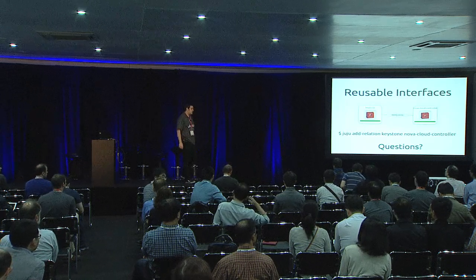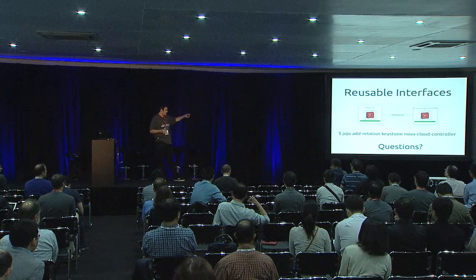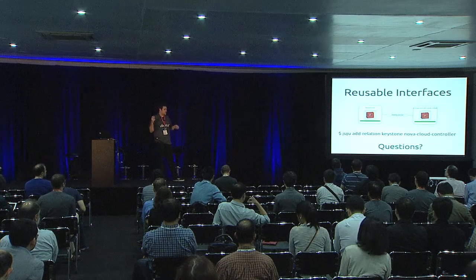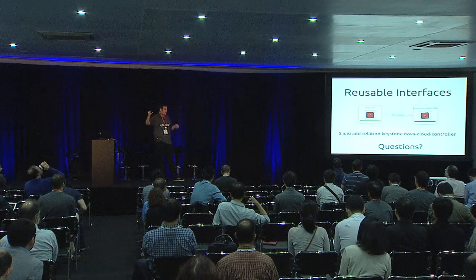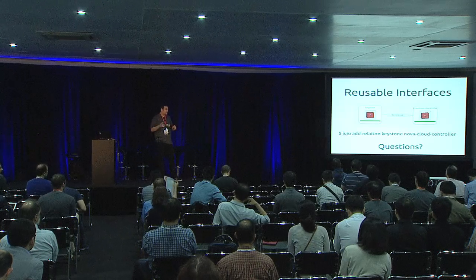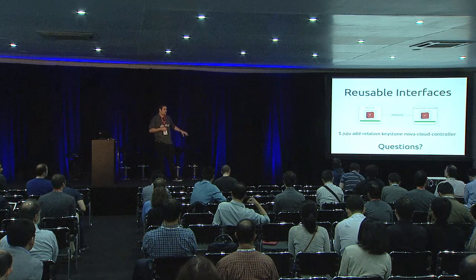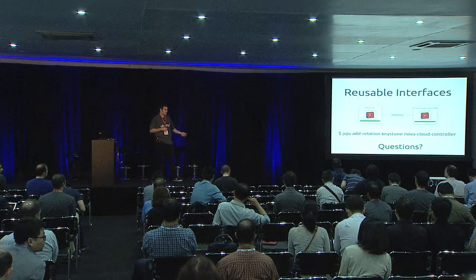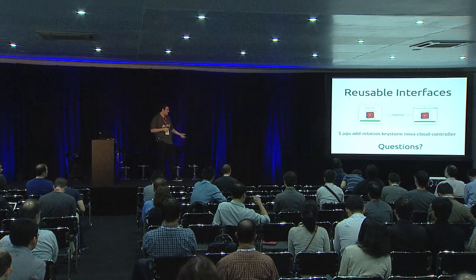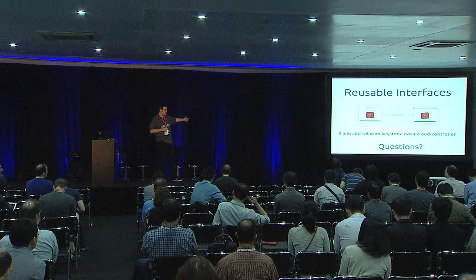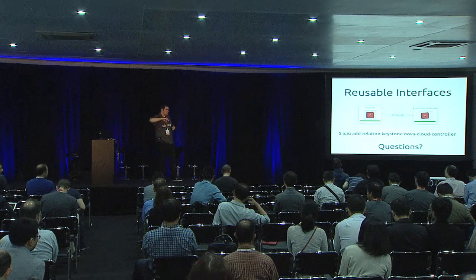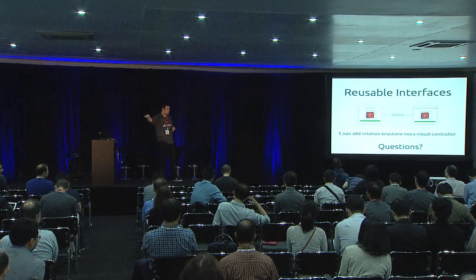We've designed the interface between Keystone and other services to be automated so that every service in the cloud gets a unique password, and every machine running a service that needs to authenticate with Keystone gets added to a project and a tenant on the Keystone side. The project and the tenant are configurable, so if you want to change where those services are being created in the Keystone authentication database, you configure that on the Keystone side, and it will regenerate the credentials and send them out through the associated interfaces.